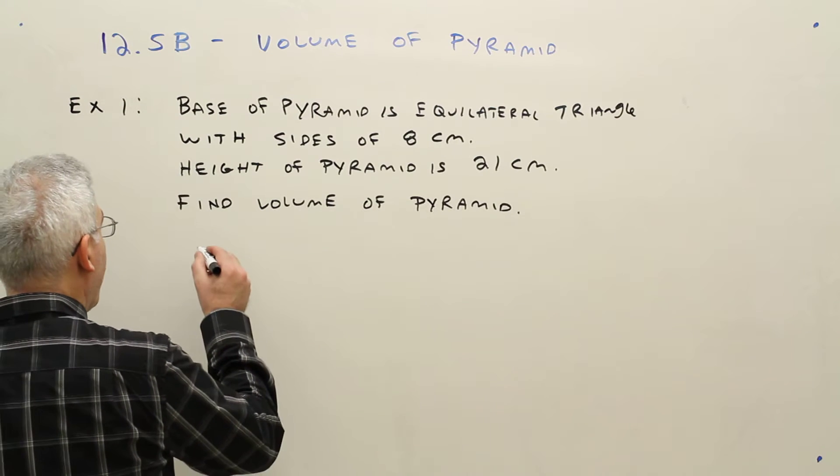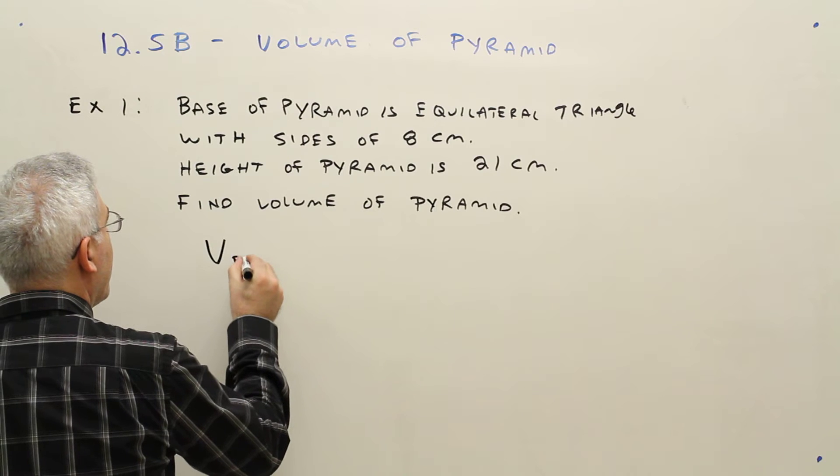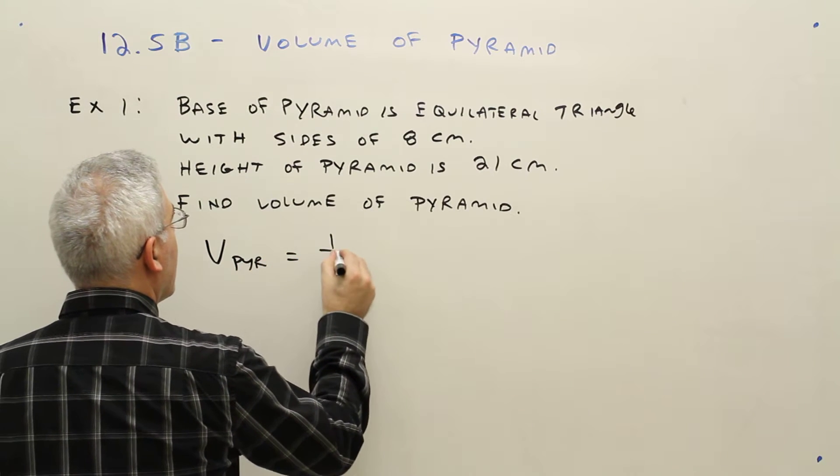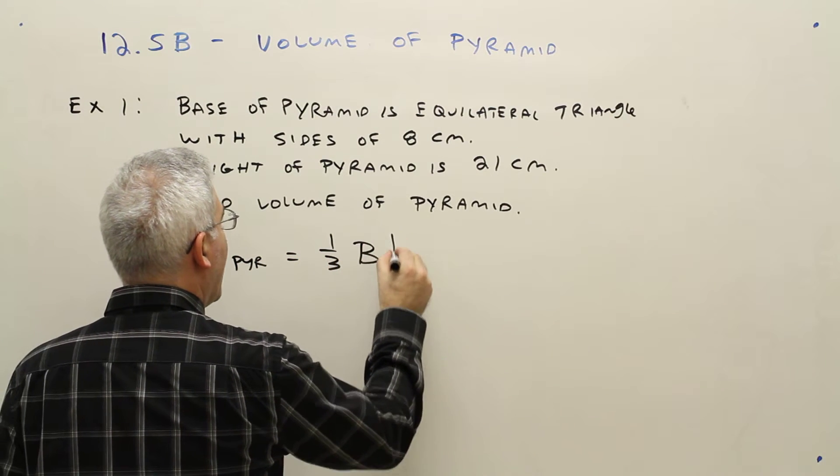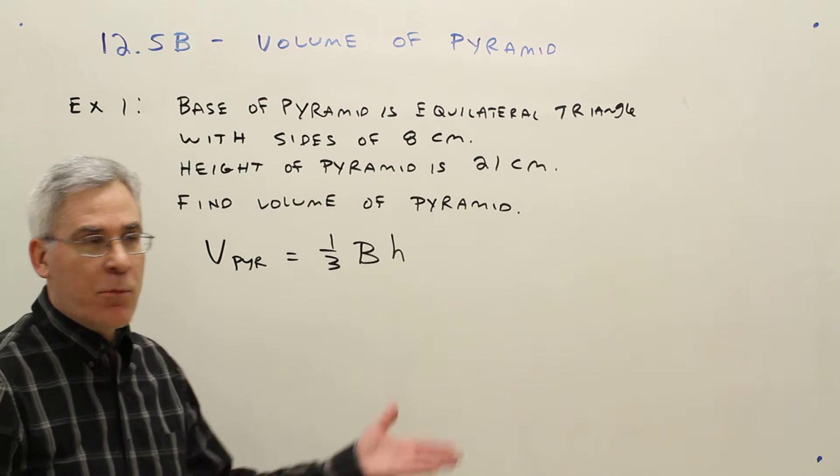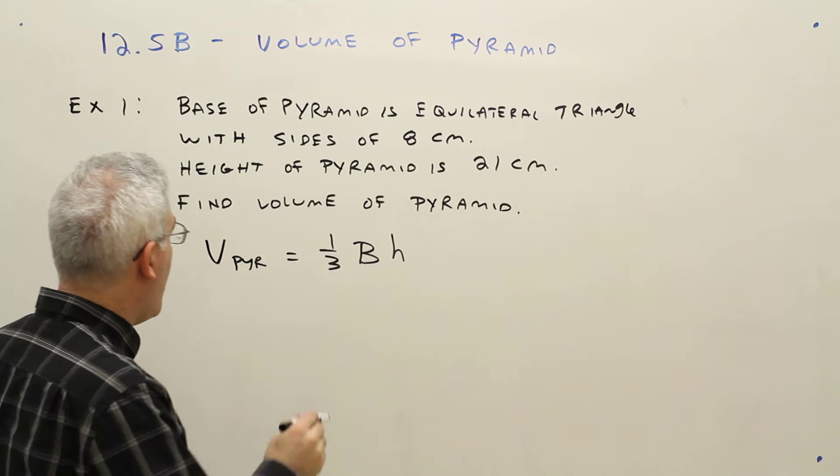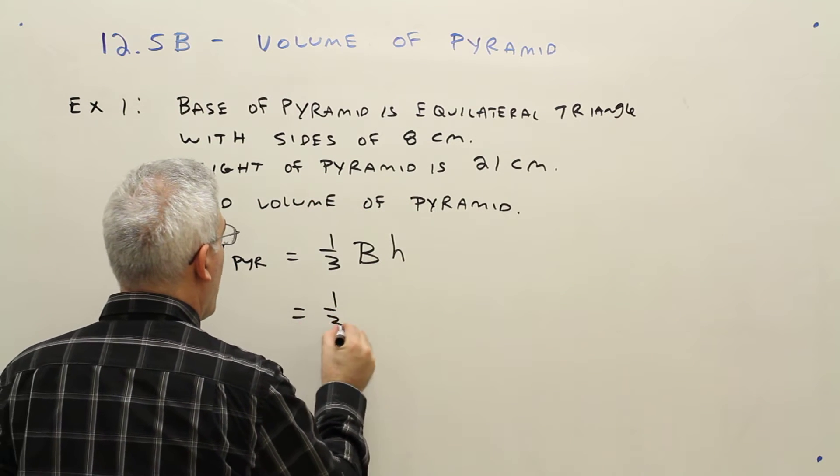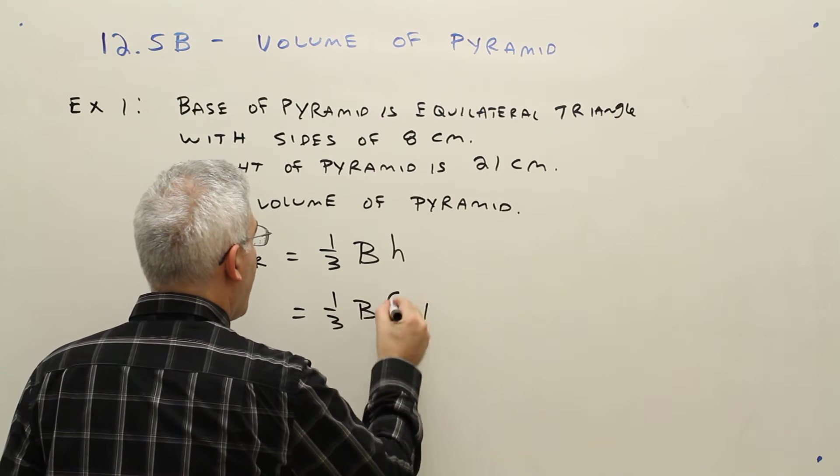So the volume formula, volume of a pyramid equals one-third base times height. We've already got the height. The height is 21, so it equals one-third base times 21.